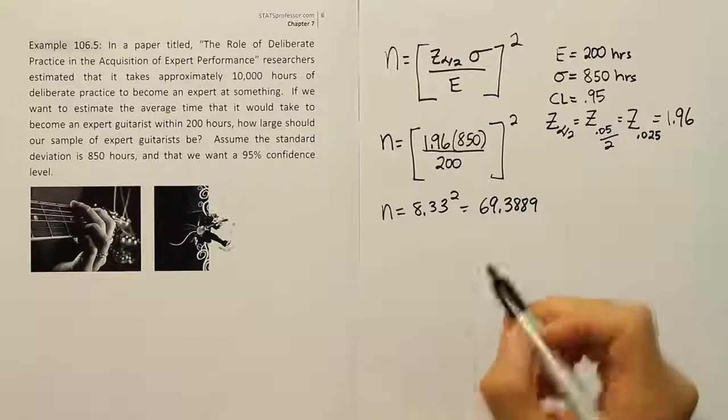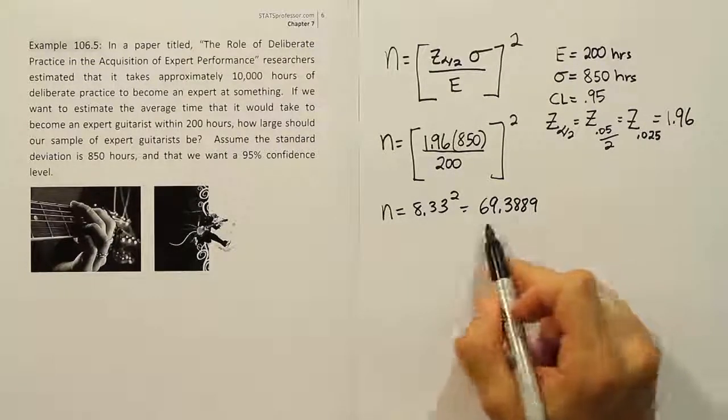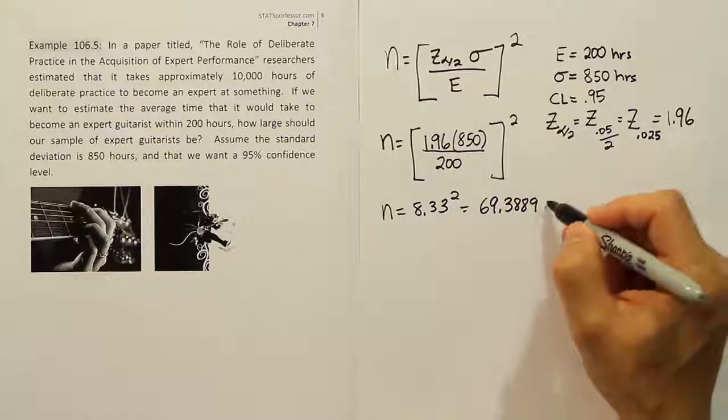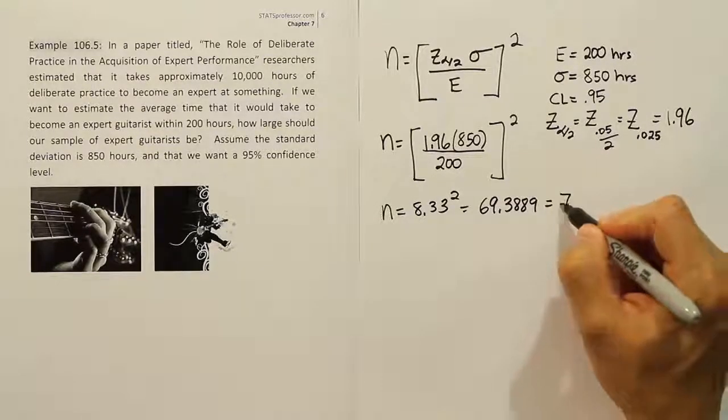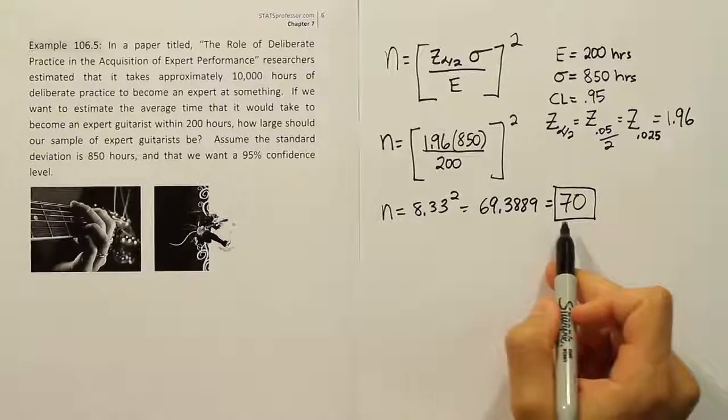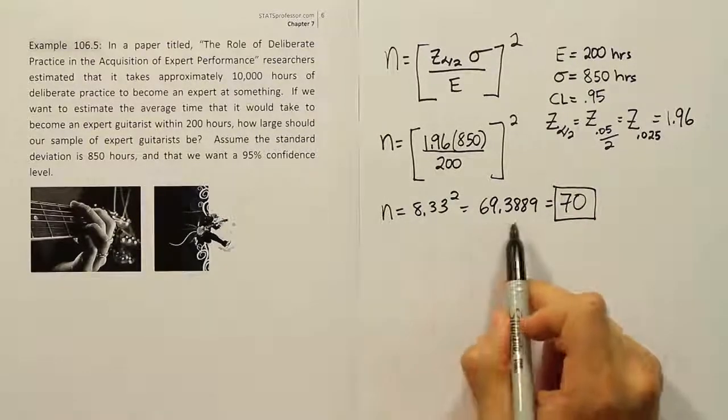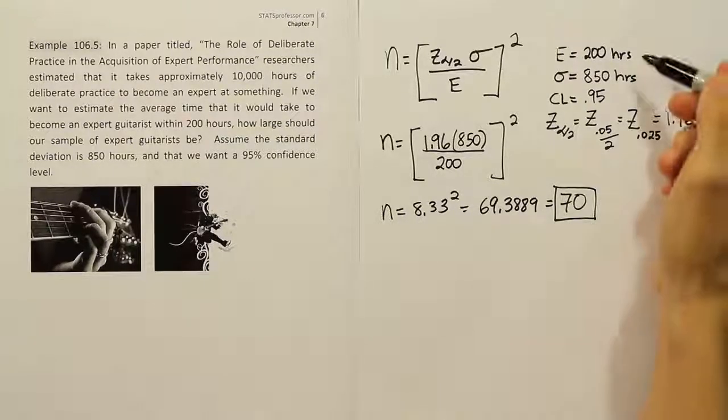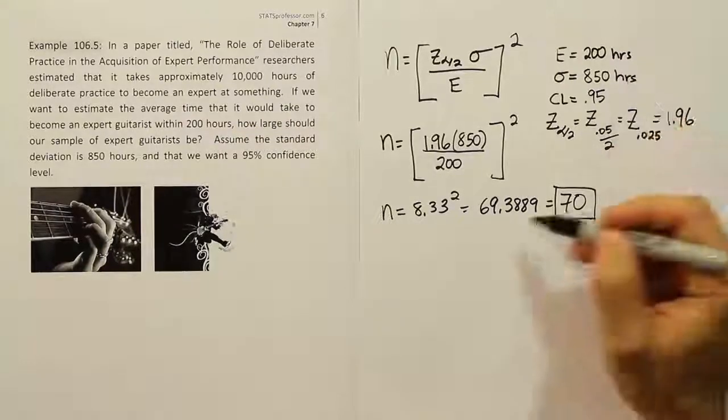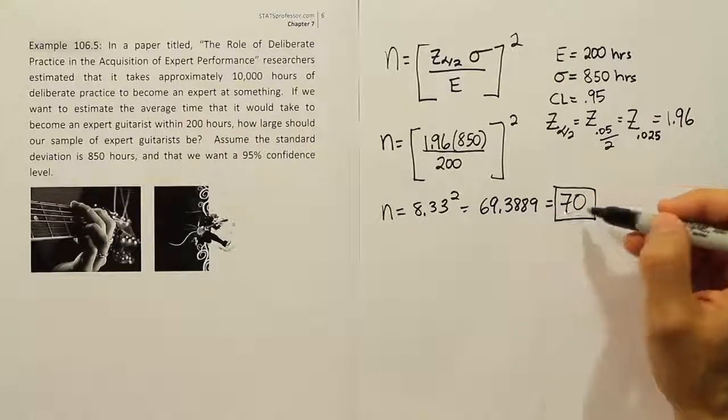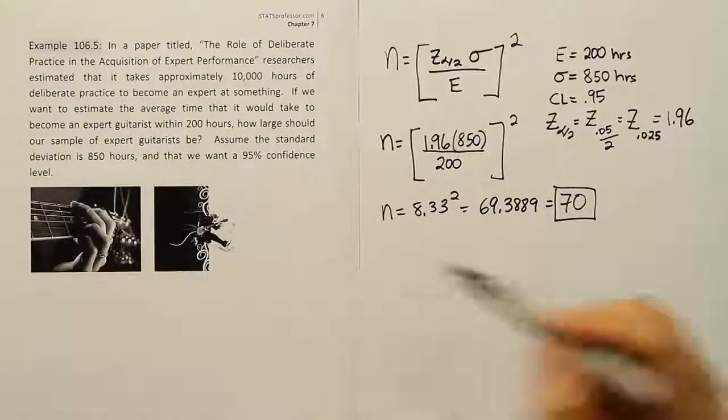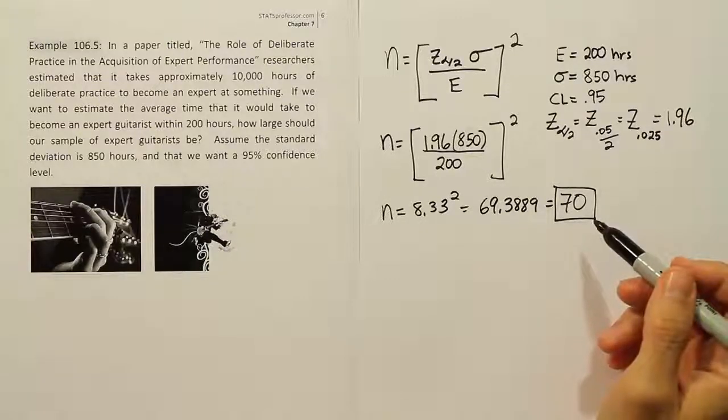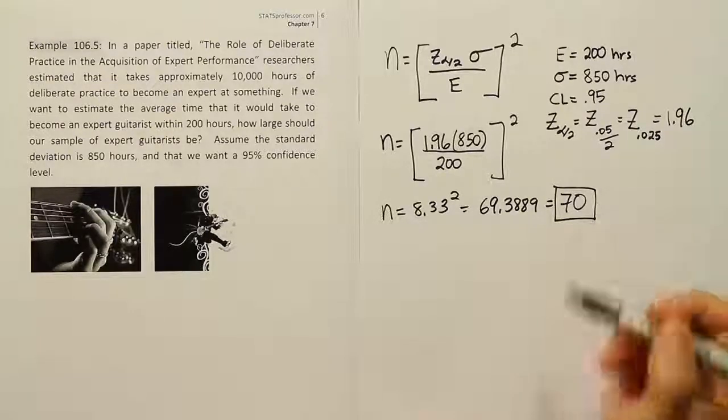So is that our answer? Well, no, because we cannot use a decimal number for sample size. We can't survey a fraction of a person. So we'll round this up to 70. We do that because this is the minimum sample size required, so we're never allowed to round down. Rounding up ensures we have the quality we specified. So 70 guitar experts will have to be surveyed to determine the amount of time it would take to learn guitar at an expert level.